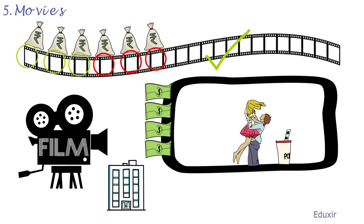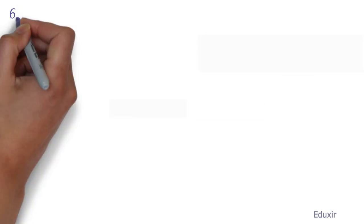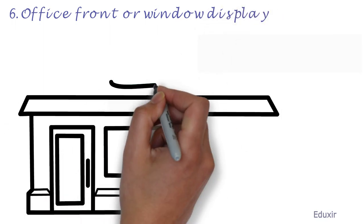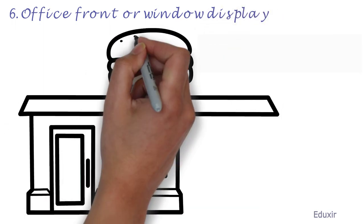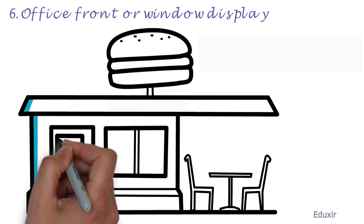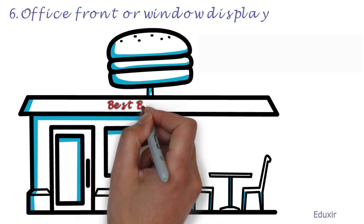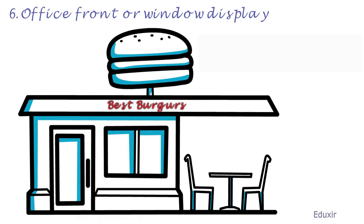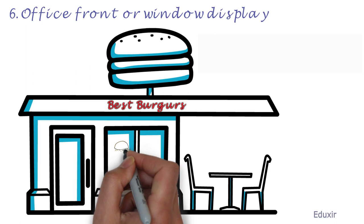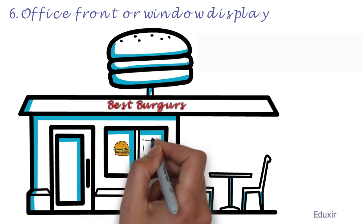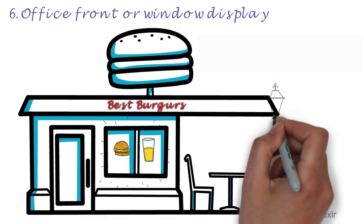The sixth form of media option available is Office Front or Window Display. In this form of advertising, the business office or shop's exterior is well maintained with clear and bold sign. Windows are maintained bright and attractive and well lit during the night hours.